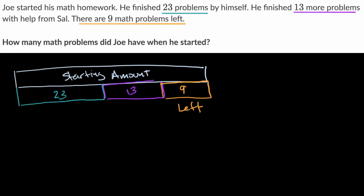So that's this amount right over here - the ones he did by himself plus the ones he did with Sal. That's going to be 23 plus 13. Now 23 plus 13, if I just think about it, I have two tens here. So that's 20 plus 3 plus 10 plus 3.